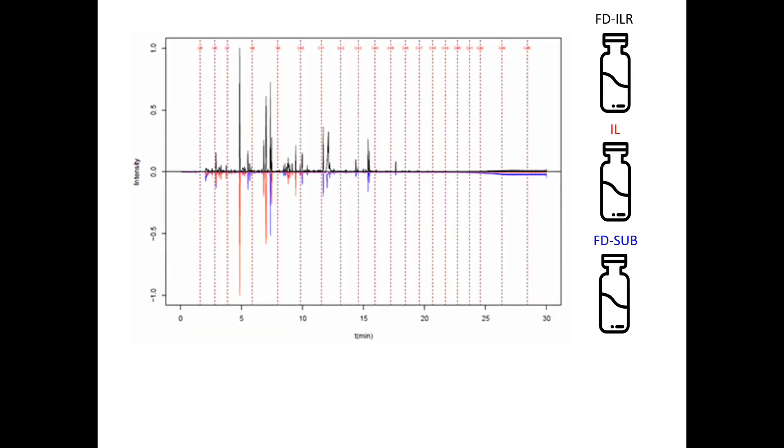The plots demonstrate the contribution of ignitable liquid and substrates in the fire debris sample. The black total ion chromatogram in the upper section is the fire debris sample. The blue total ion chromatogram in the lower section is the substrate or substrates in the fire debris sample. The red total ion chromatogram in the lower section is the ignitable liquid in the fire debris sample.